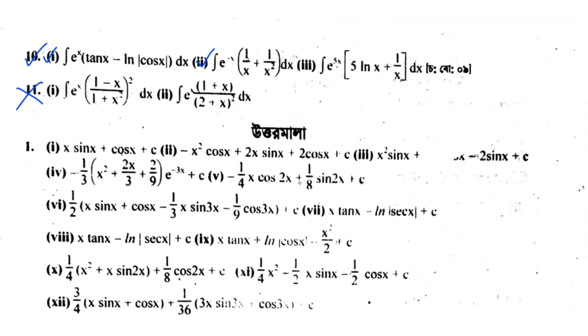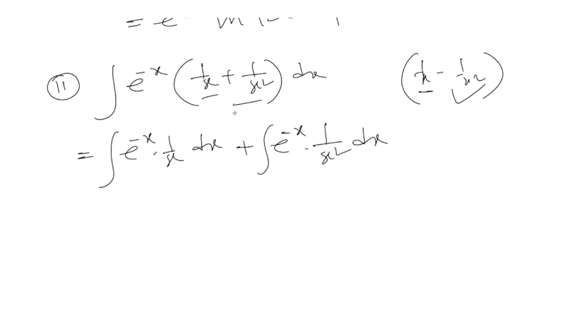Problem number two: the integral of e^(4-x) times (1/x + 1/x²) dx. We can separate this into the integral of e^(4-x) times (1/x - 1/x²) dx. Taking e^(4-x) times 1/x, we apply integration by parts where e^(4-x) is the first function and 1/x is the second, giving us e^(4-x) times 1/x plus the integral of e^(4-x) times 1/x² dx.